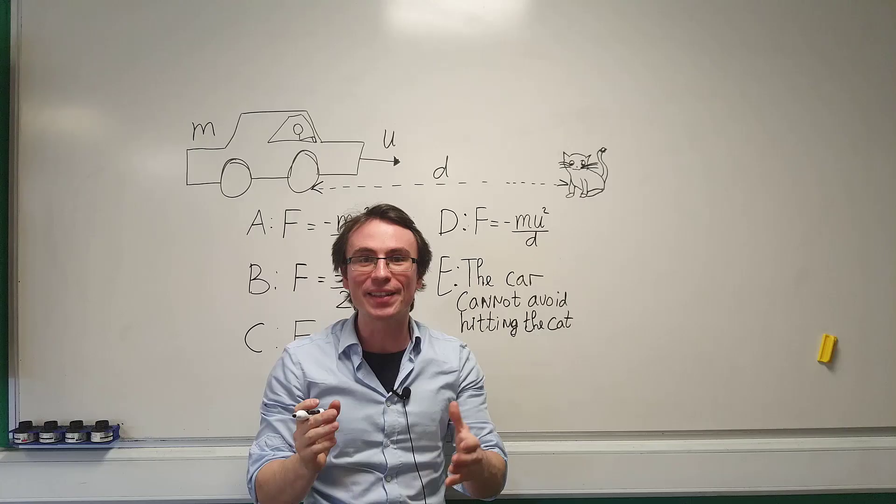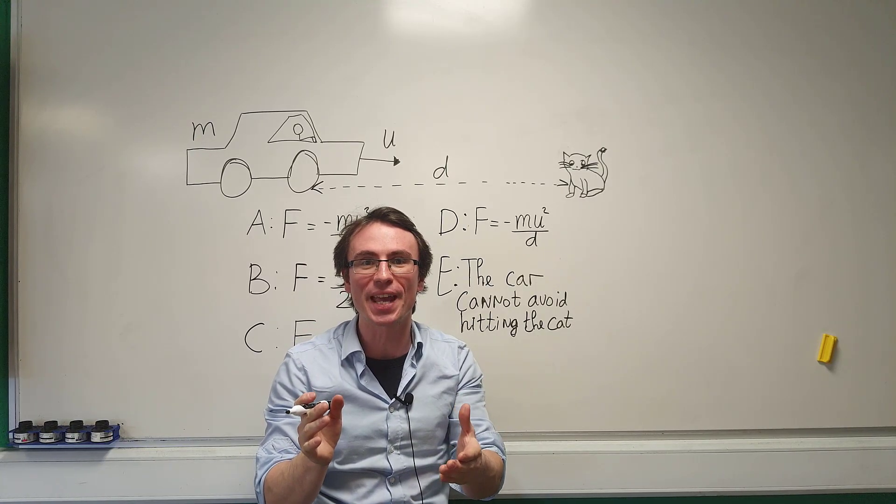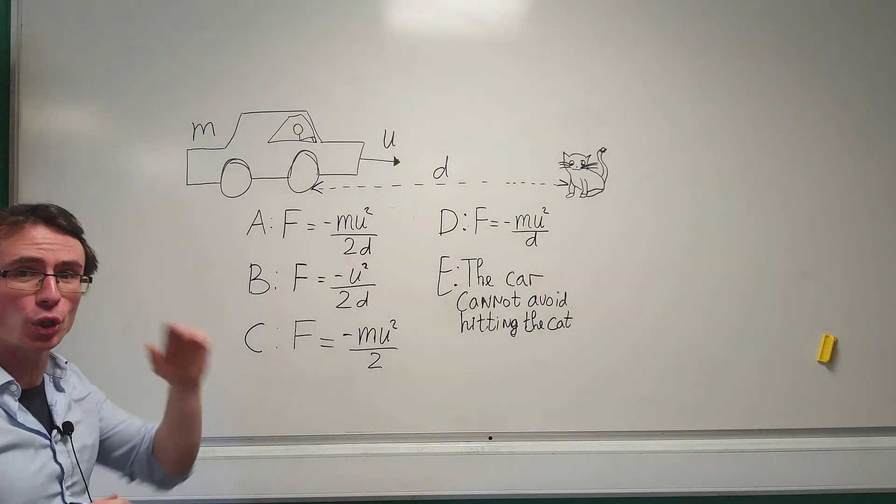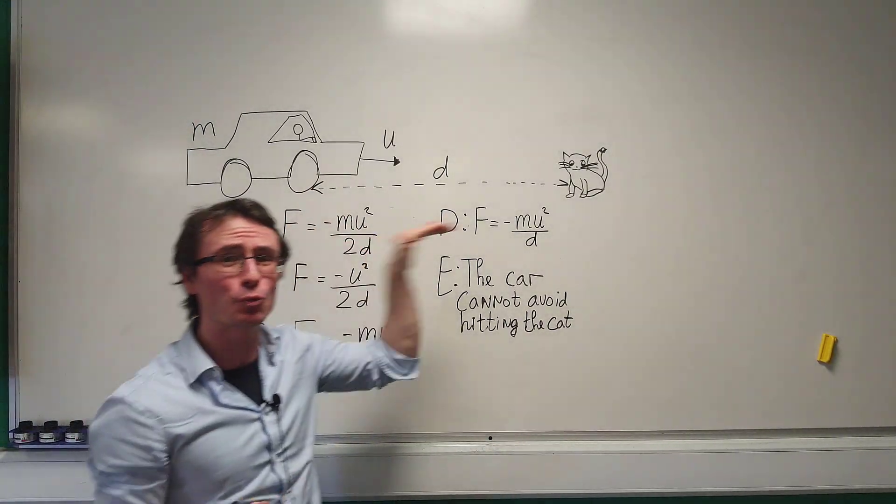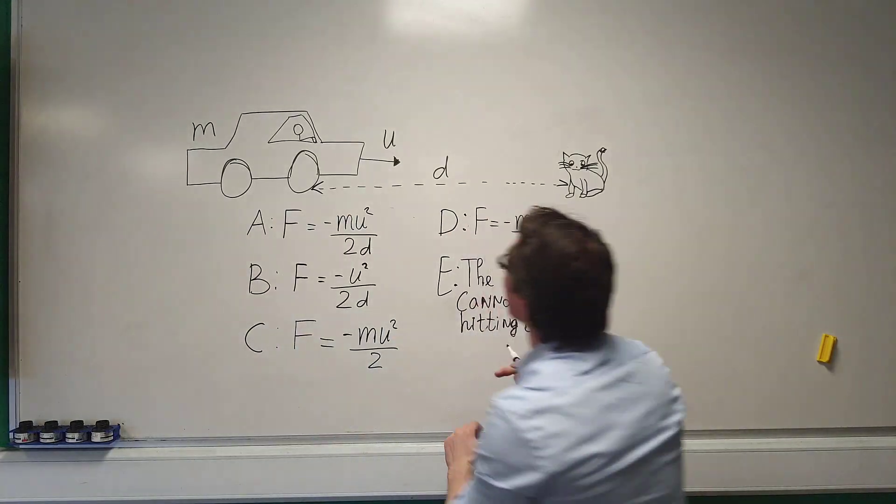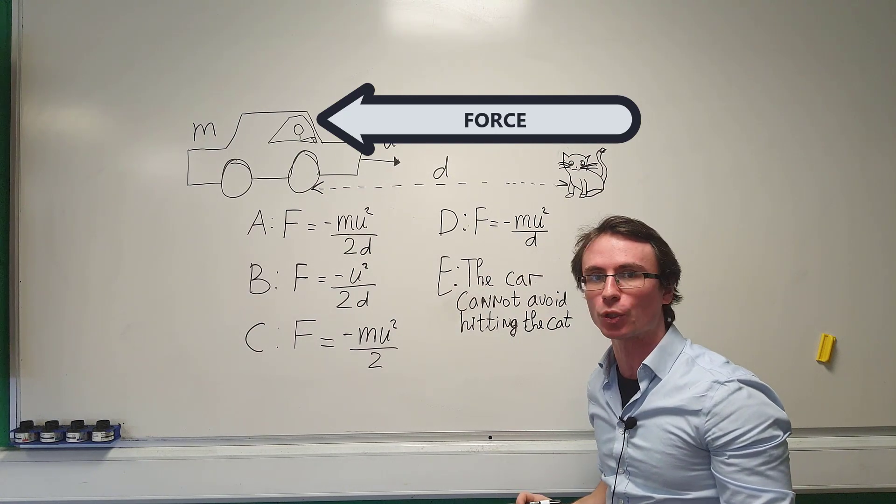We have a kitten in danger in this Oxford physics admission test from 2018. So we have this car of mass m which is traveling at a speed u directly towards this kitten and we need to save it by providing a force in the opposite direction.